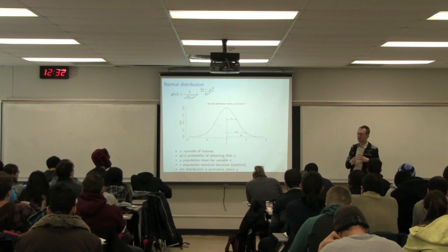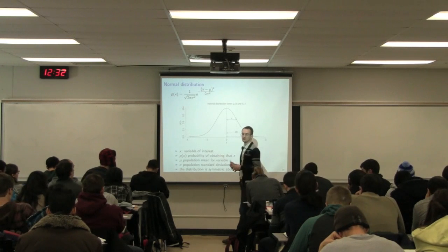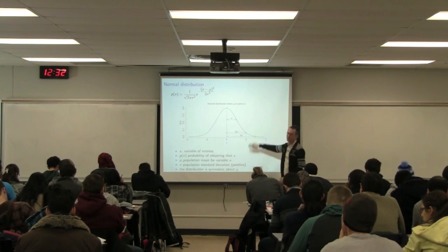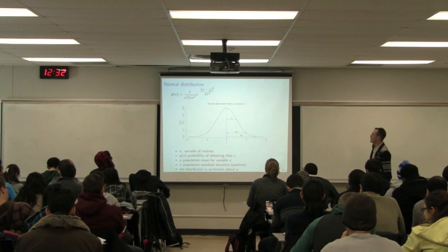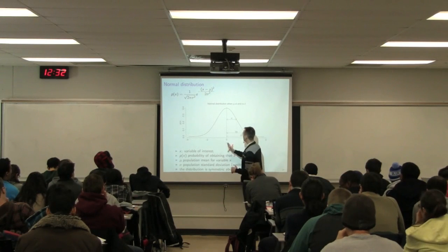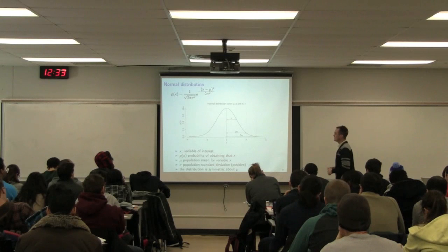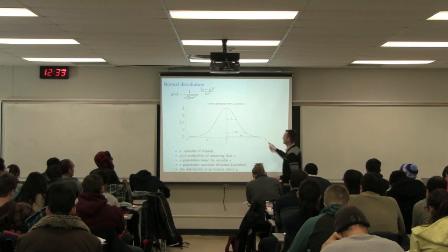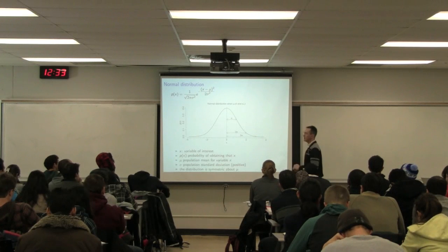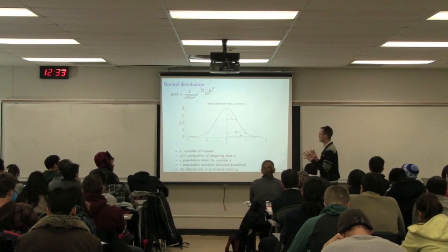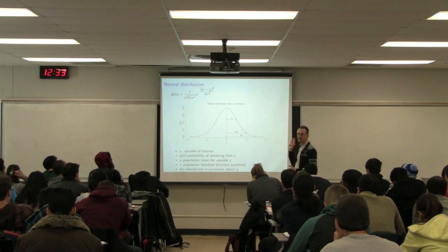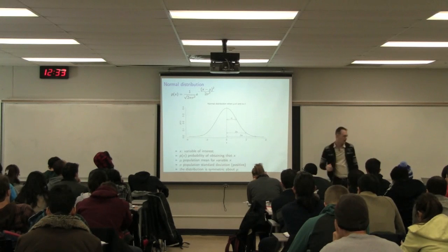The central element says we take our data, compute the average, and that average will follow a normal distribution. The normal distribution equation will show up — that's the first and last time we see it. We don't care about that equation. What we do care about is what the plot looks like: it's centered at zero, that's our mean, and sigma is the point of inflection of this curve. The distribution is also symmetric.